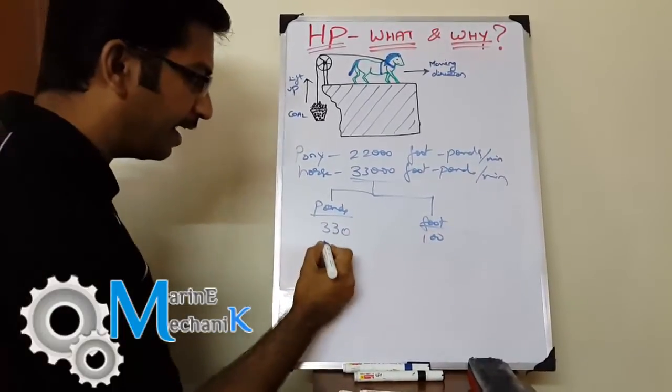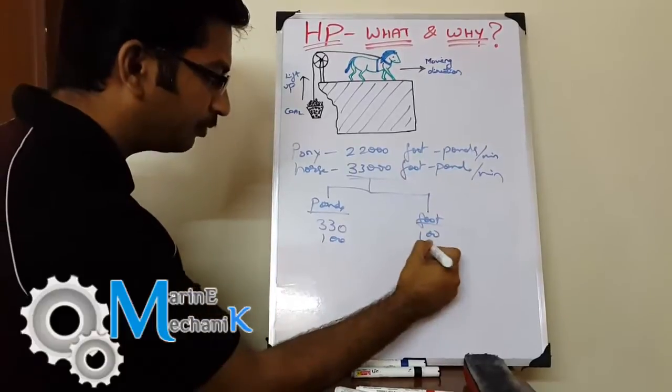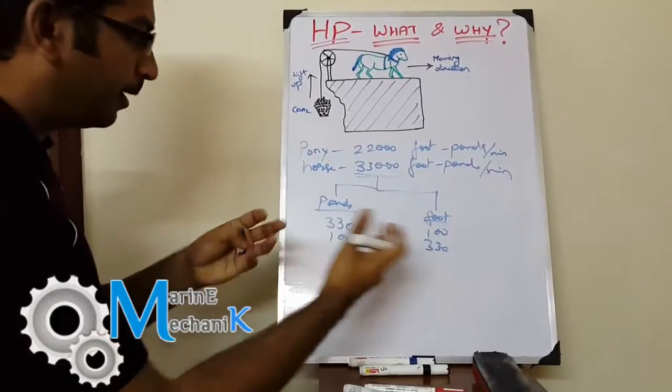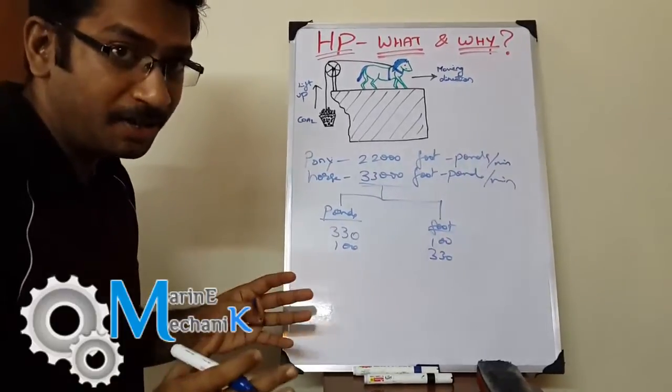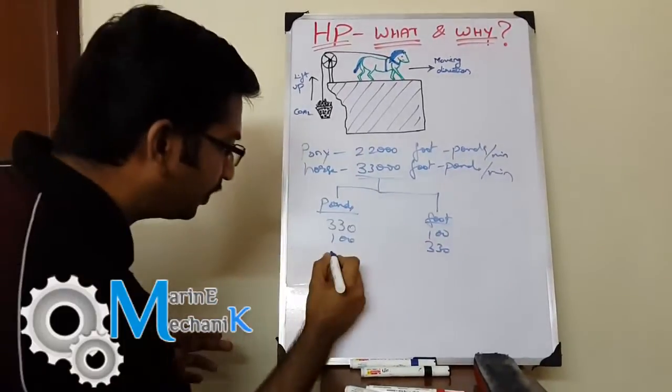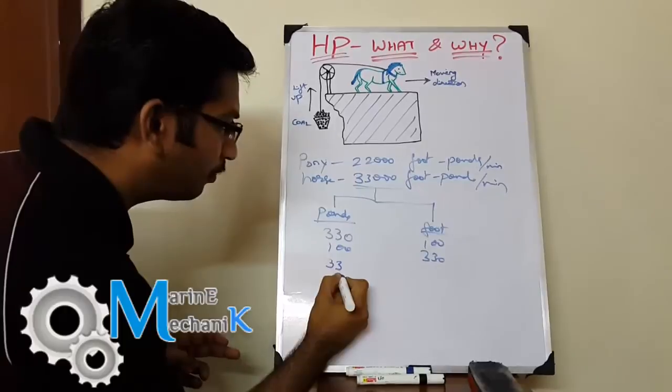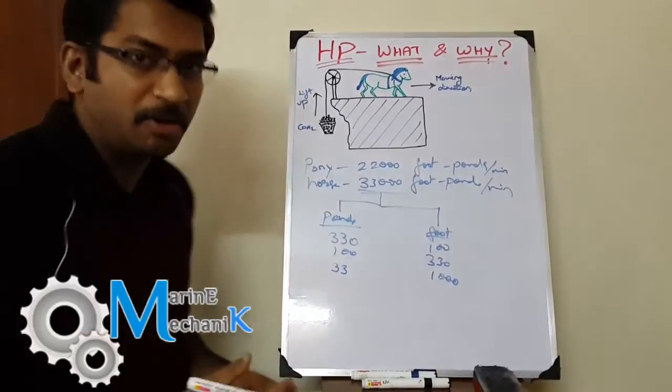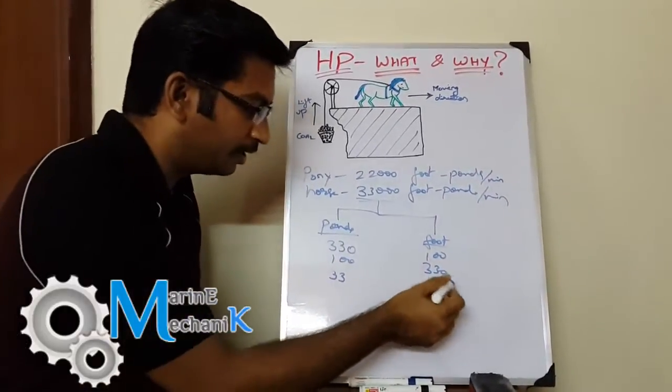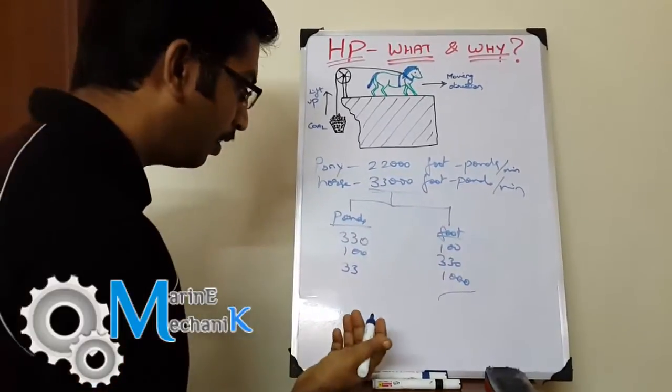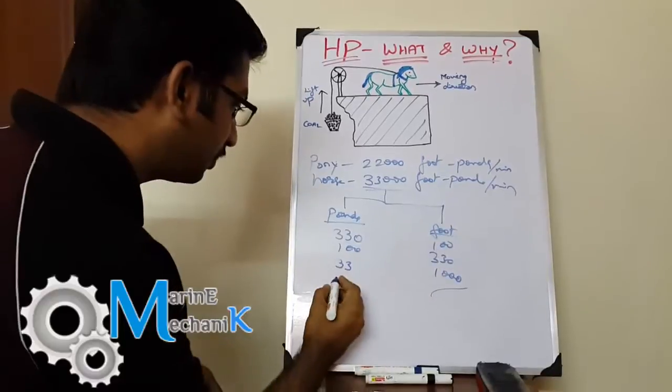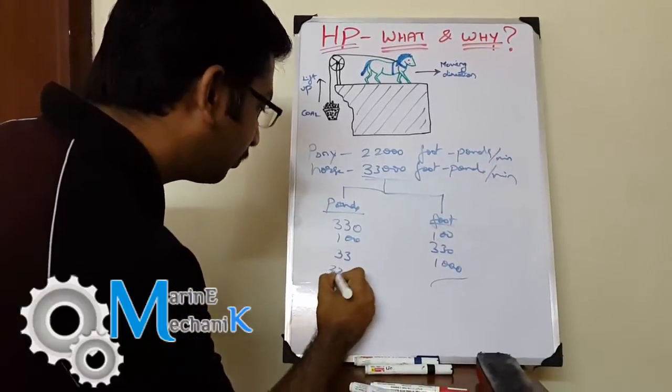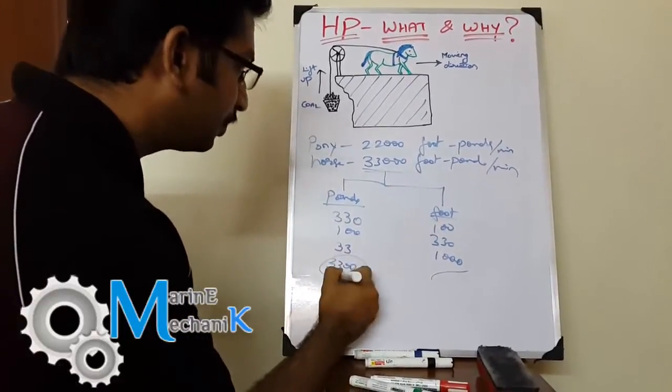You can work out various combinations, but there is a limitation. You cannot say 33 pounds and 1,000 feet per minute because it's not possible—a horse cannot travel at that speed.